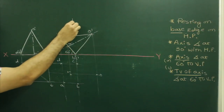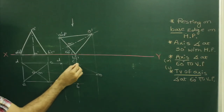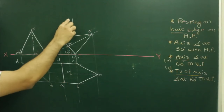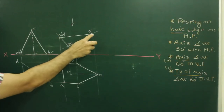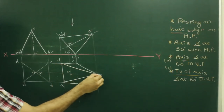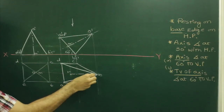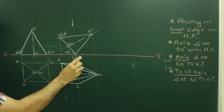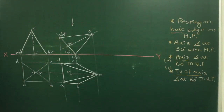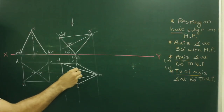The observer is viewing from the top, so boundary lines will be dark. O dash–A dash and O dash–D dash are visible, so O–A and O–D will be dark in top view. This is the axis. B dash–C dash cannot be seen from top, so B–C will be dotted.